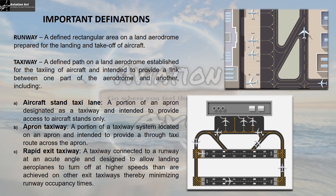Let us look at the different types of taxiway. First is the aircraft stand taxiway. It is a portion of an apron designated as a taxiway and is intended to provide access to the aircraft stand only. As you can see in the image, this part of the taxiway that provides access to the aircraft stand only is the aircraft stand taxiway.